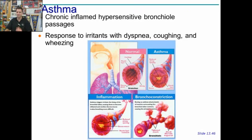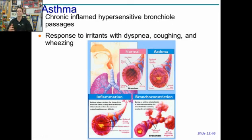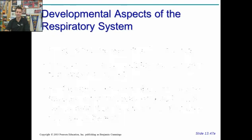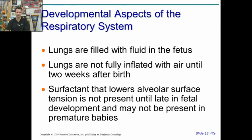Asthma involves inflamed bronchioles and alveoli, causing dyspnea and wheezing. Because of the inflammation, it's harder to bring air in and out and to perform gas exchange in the alveoli and bronchioles, so there's less air coming in and out.